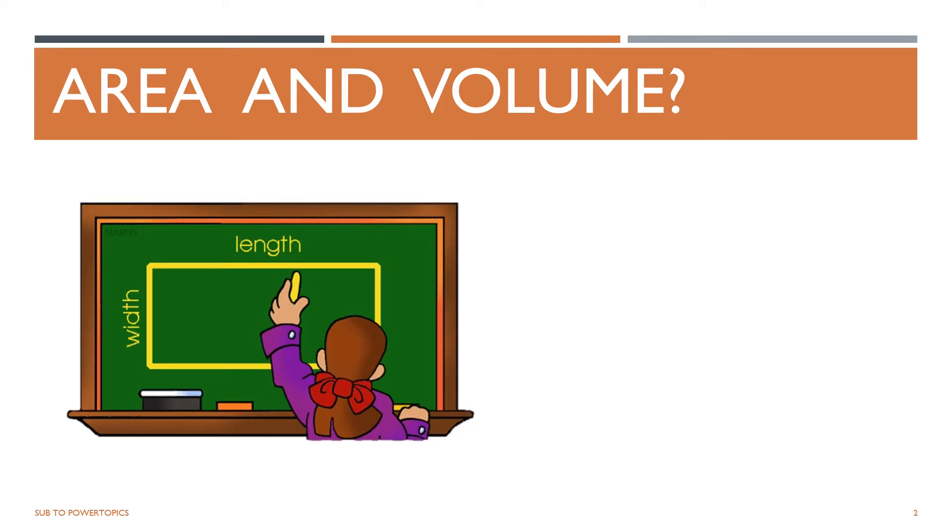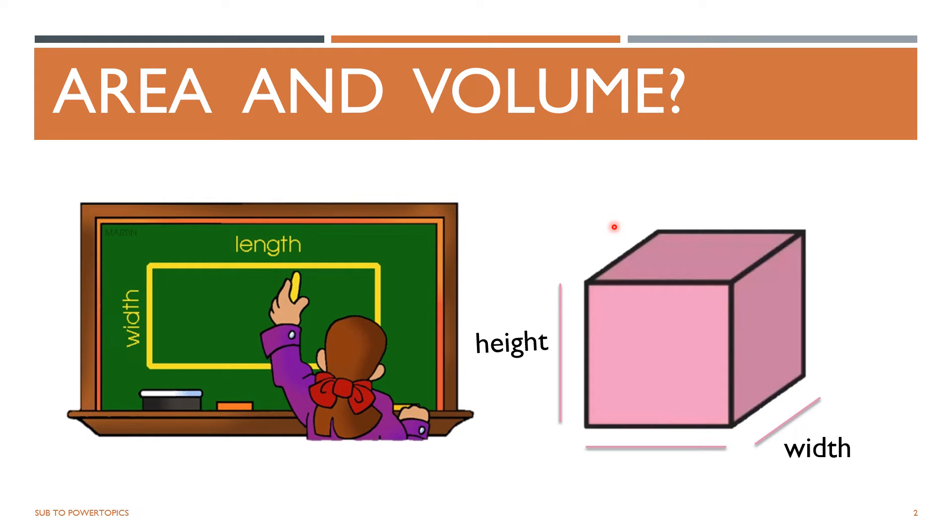As you've been taught, to find the area of a shape, you need to multiply the width and the length. But to find the volume, you need to multiply the height, the width, and the length. Volume is for 3D shapes and area is for 2D shapes.